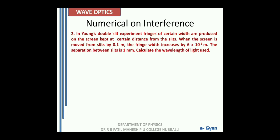Next numerical on interference: in Young's double slit experiment, fringes of certain width are produced on a screen kept at a certain distance from the slits. When the screen is moved away from the slits by 0.1 meter, the fringe width increases by 6 × 10⁻⁵ meter. The separation between the slits is 1 mm, which is 1 × 10⁻³ meter. Calculate the wavelength of light used.